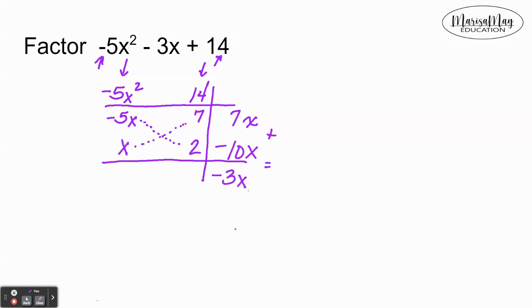So I know that I have factored it correctly. Here's what we do, we take the rows. Notice the first row inside is negative 5x plus 7, and the second row is x plus 2, and it's factored.